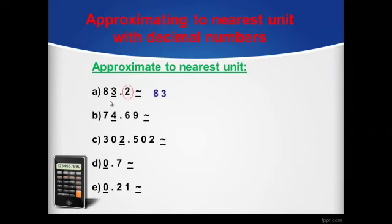Next one: 74.69. We will keep numbers before the units digit the same as it is — 7. Then we will look at the tenths digit, which is 6, a strong number. That will give 1 to our units digit, and 4 will become 5.